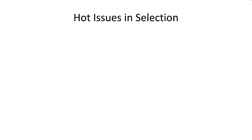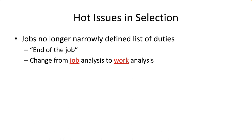Here are some hot issues in selection. The nature of a job has changed over time — jobs are no longer a strict, short, well-defined list of specific tasks and duties. The end of the job is here. Jobs change, and a strictly written job description is often too constraining on employers' needs to fill future demands. Therefore, job analysis should maybe be changed to work analysis. We should consider not just what each particular job does, but what each job can contribute to the success of the firm, even if duties change from time to time.